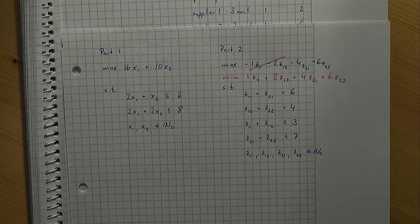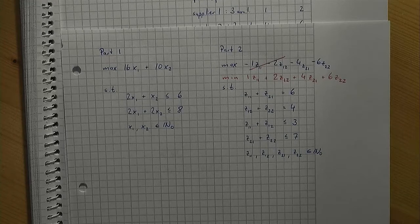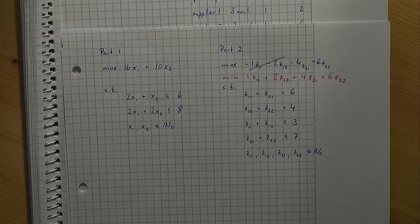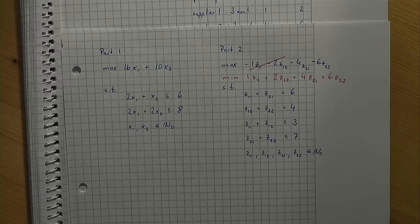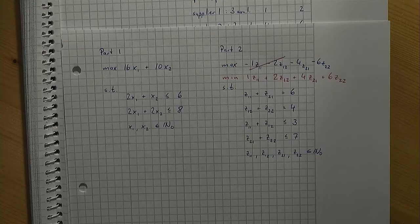We can formulate one big model, so to say, that includes all the aspects that are relevant in one common model. Or, as an alternative, we can formulate two smaller models that cover the two independent aspects of the problem without omitting anything. Both approaches are correct. But what is better?